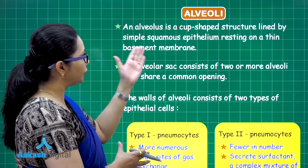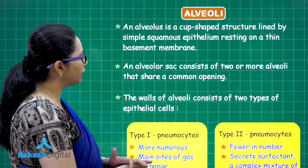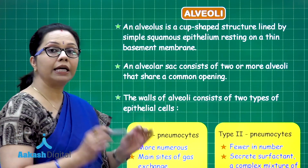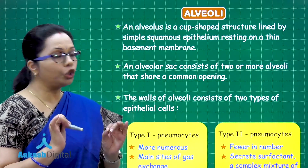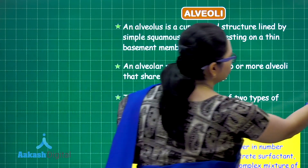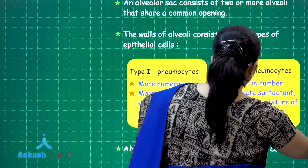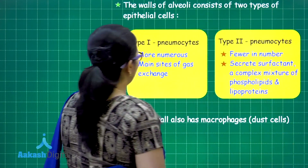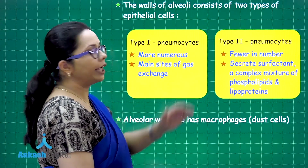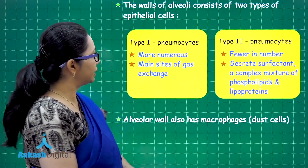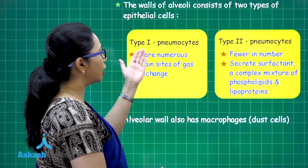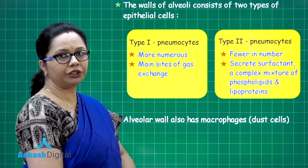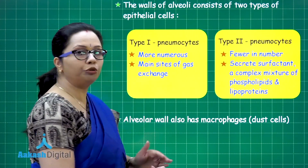The wall of the alveoli is lined by simple squamous epithelium. These squamous epithelial cells are called pneumocytes, categorized into two types: Type 1 pneumocytes and Type 2 pneumocytes. Type 1 pneumocytes are more numerous and are the main sites of gaseous exchange.